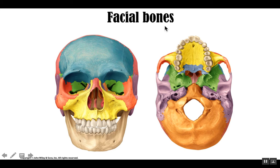There are 14 facial bones. Most of these bones come in pairs, right and left. The exception is the vomer and the mandible.